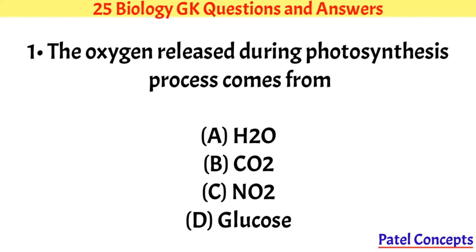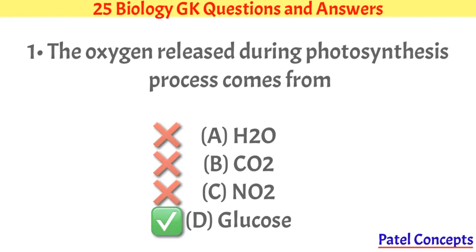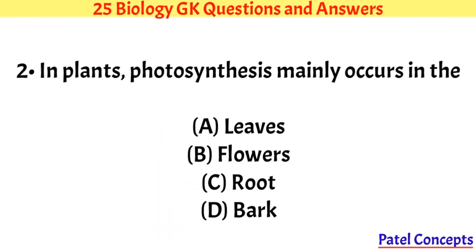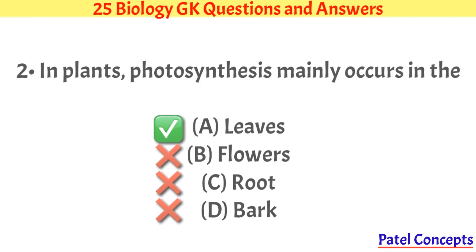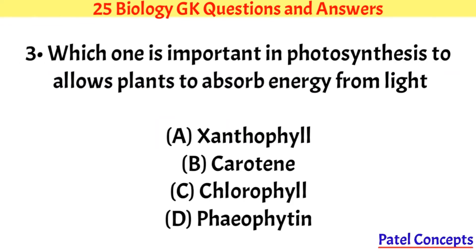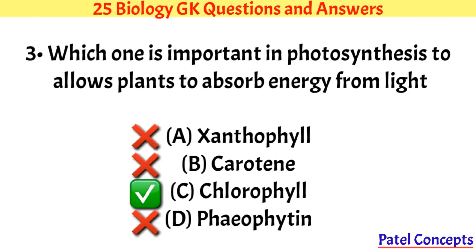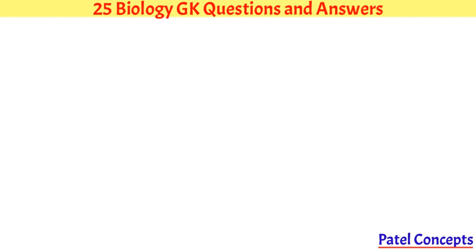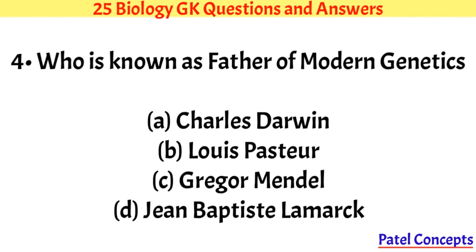The oxygen released during the photosynthesis process comes from glucose. In plants, photosynthesis mainly occurs in the leaves, which was important in photosynthesis to allow the plant to absorb energy from light. Chlorophyll is the answer. Who is known as the father of modern genetics?